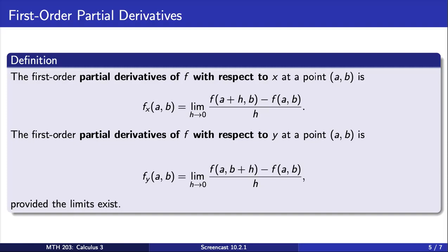Each partial derivative at a point arises as the derivative of a one-variable function defined by fixing one of the coordinates. Thus, computing partial derivatives is straightforward. We use the standard rules of single-variable calculus, but do so while holding one or more of the variables constant.